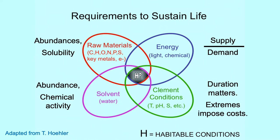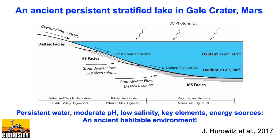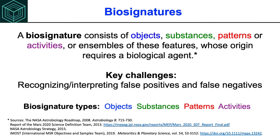This is not just an idle numerical exercise. It has actually borne fruit from the Curiosity rover mission, which identified an ancient persistent stratified lake in Gale Crater, Mars — not there now, but present billions of years ago. Observations of multiple layers of sedimentary rocks formed underwater indicate the former presence of a persistent water body. The mineralogy and chemical measurements indicated that the pH was pretty moderate, salinity was relatively low, and key elements for life were available. As indicated by an oxidant-reductant gradient in the water column, there were even chemical energy sources available, and potentially sunlight as well. So, this was an ancient habitable environment — not to say it was inhabited, but it was habitable.